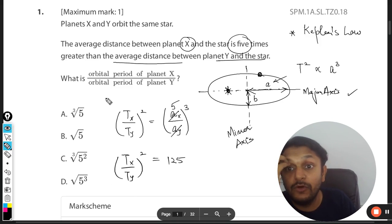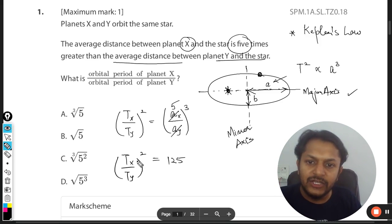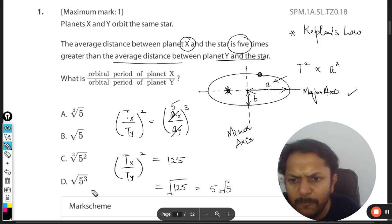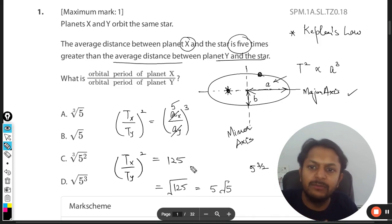This is Tx divided by Ty square. Now what do we want to find? We want to find the ratio of orbital period of X to Y, so we have to just take the square root here. So it will become 125 square root, or you can say 25 into 5, so that will be 5 root 5.